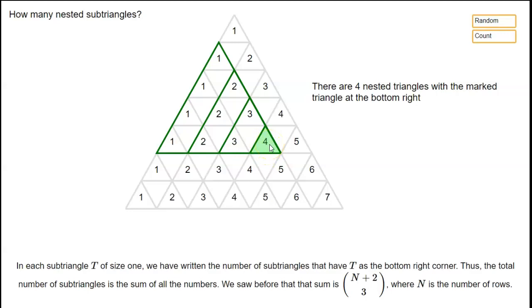If we instead highlight this triangle here, well we've written a 4 in there because there's four different triangles that we can have that have this highlighted triangle as the bottom right corner. We can have one of size 1, one of size 2, one of size 3, one of size 4.